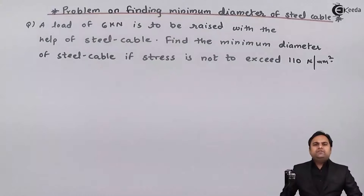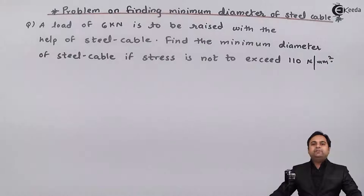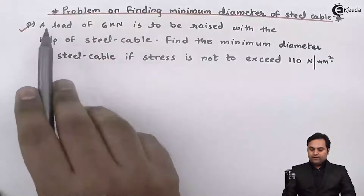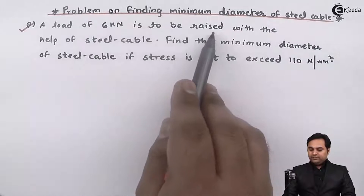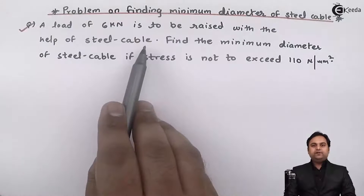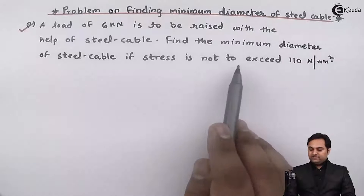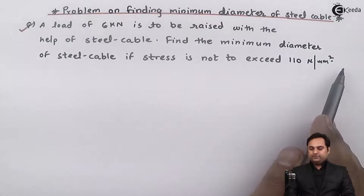Hello friend. In this video we are going to see a problem on calculation of minimum diameter for a steel cable. So let us read this question: a load of six kilo Newton is to be raised with the help of a steel cable. Find the minimum diameter of the steel cable if stress is not to exceed 110 Newton per mm square.